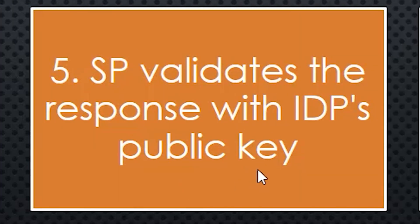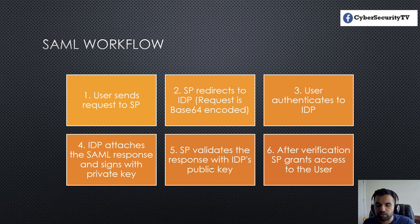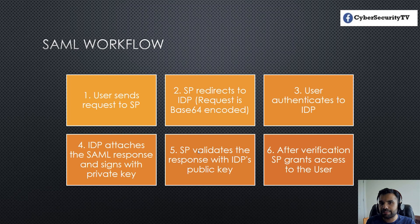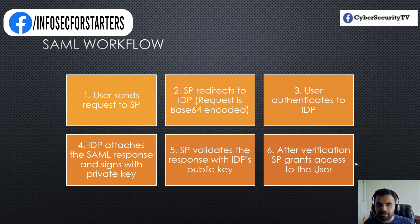Now the SP, which is the service provider, validates the response with the IDP's public key. So it has access to Gmail's public key and it will validate whether the signature is actually from Gmail or if somebody is forging it. One scenario is: what if the service provider is not validating the IDP signature? I could forge a signature using some other site and give it to the service provider, and if it trusts me, I'll get access to abc.com. We'll discuss this risk later. The last step is, after verification, the SP grants access to the user.